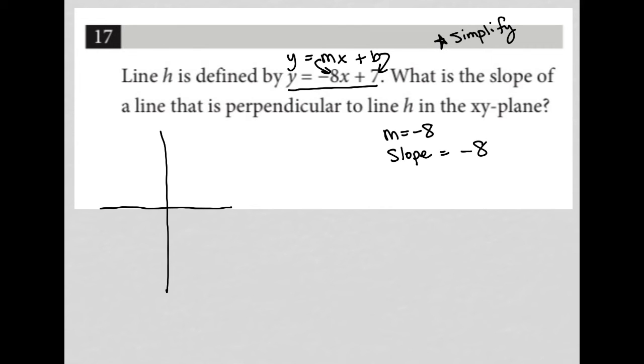Now for a perpendicular line, perpendicular lines have opposite reciprocal slopes. So opposite and reciprocal. That's opposite sign.